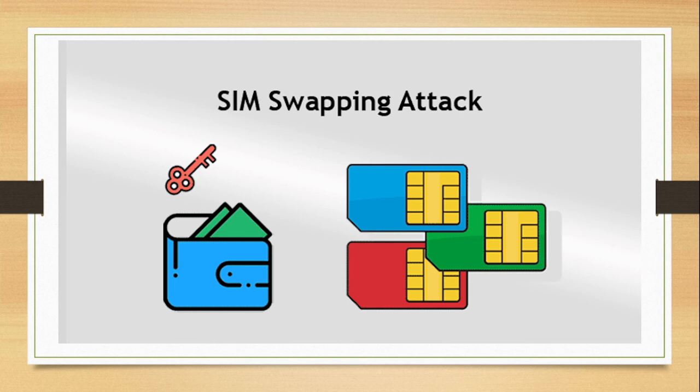So what is SIM swapping? A SIM swapping attack is a technique that hackers use to redirect your phone number into another SIM card that they use, transferring all your details so they can perform the normal things you do with your SIM card.